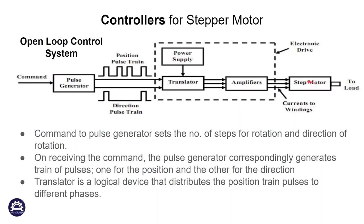The logical sequencer drives the amplifier, and the amplifier drives the stator windings with the required current. This completes the open loop control system diagram.